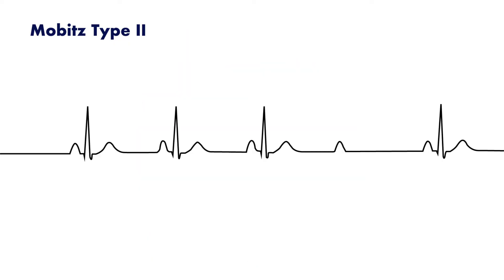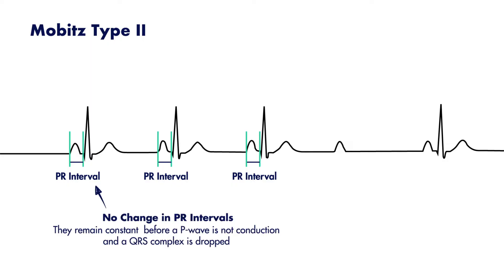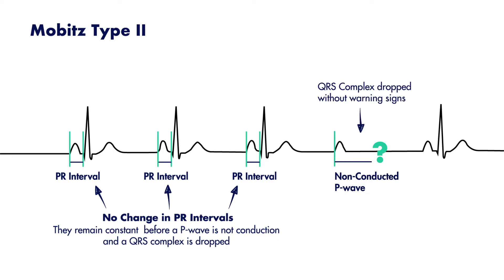On a cardiac strip, in contrast to type 1 second degree AV blocks, there is no change in the PR interval prior to or after the non-conducted P wave. In other words, there is no warning sign, such as a gradually changing interval as you see with a type 1 second degree AV block.